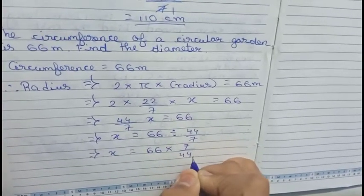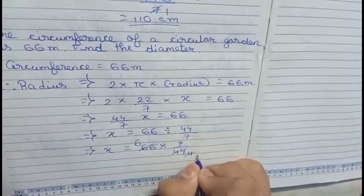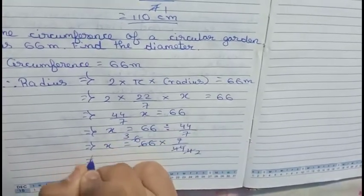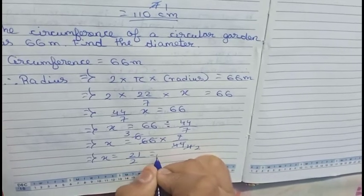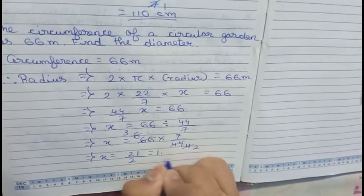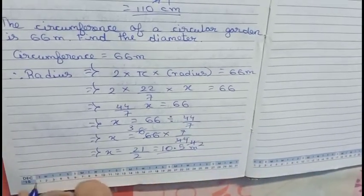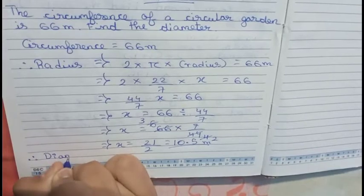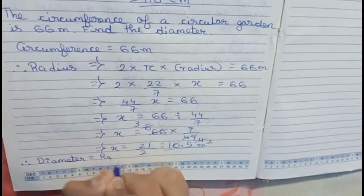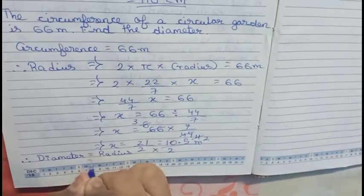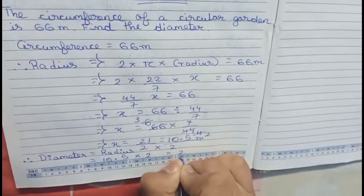Reciprocating, x equals 66 into 7 by 44. We can cancel 44 and 66 by 11 to get 6, then cancel by 2, giving x equals 3 into 7 by 2, which is 21 by 2 or 10.5 meters. So this is our radius. Now the diameter equals 2 into radius, which is 10.5 into 2, equals 21 meters. So this is our final answer.